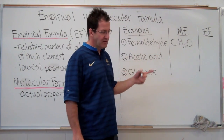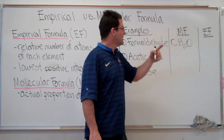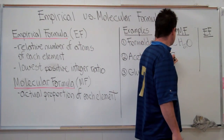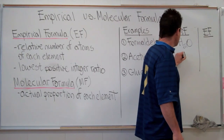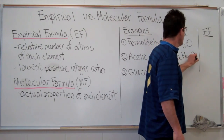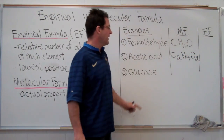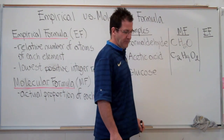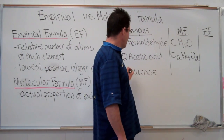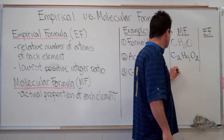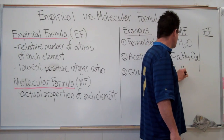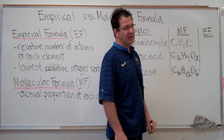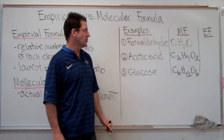Here's acetic acid. The molecular formula for acetic acid is C₂H₄O₂ — that's the chemical formula. And then glucose is C₆H₁₂O₆ — that's the molecular formula for glucose.